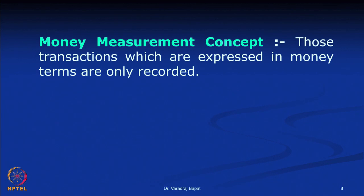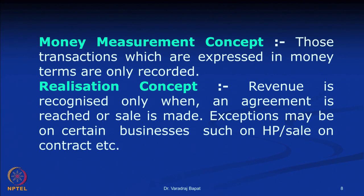Next is the money measurement concept. All transactions which are expressed in money terms alone are recorded. There could be other things like goodwill, good contacts, relations or emotions which cannot be measured in money — such things cannot be recorded in accounting. Next is the realization concept: revenue is recognized only when a particular agreement is reached, so only upon realization of a transaction is it recorded.